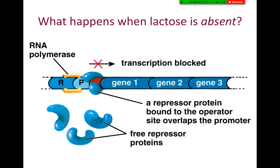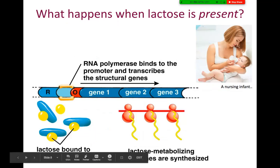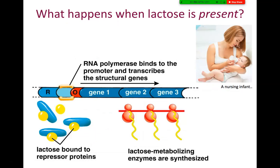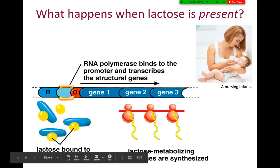This repressor protein has an active site where something can bind onto it. In the presence of lactose, it will bind onto this protein such that it changes the shape of the repressor protein, so it can no longer bind onto the operator. This allows RNA polymerase to travel down the DNA sequence, copy the genetic information, and send the messenger RNA to the rest of the cell to create the enzymes necessary to break down the lactose that is inside the cell.